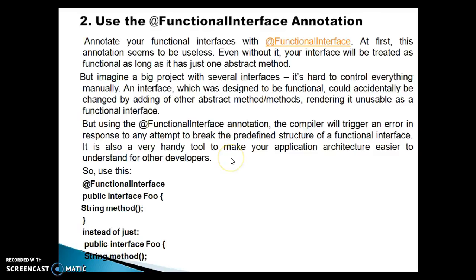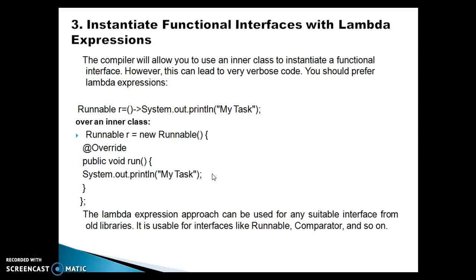That covers the second point. Now the next point in this series: instantiate functional interfaces with lambda expressions. The compiler will allow you to use an inner class to instantiate a functional interface, however this can lead to very verbose code. You should prefer lambda expressions instead of writing the inner anonymous class for a functional interface method.